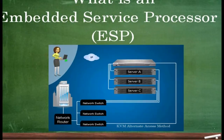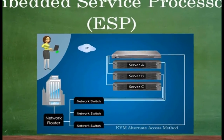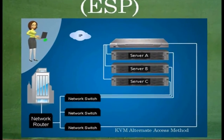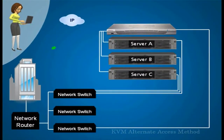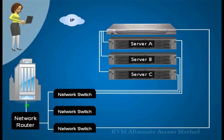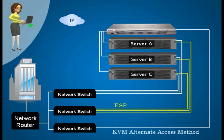A primary benefit of using a traditional KVM switch to access a server is that it provides an alternative access method. This is crucial if the primary method becomes unavailable. To mimic this functionality, most ESPs are connected to an IP network that is separate from the primary network.